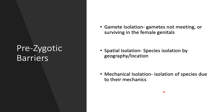There's also mechanical isolation, which is due to mechanical incompatibility. Species have different shapes, sizes, or formations of their genital area, making them only compatible with their own species. An example of this is a specific type of snail.